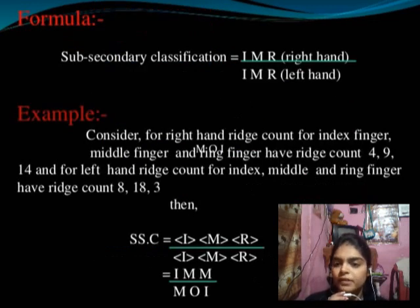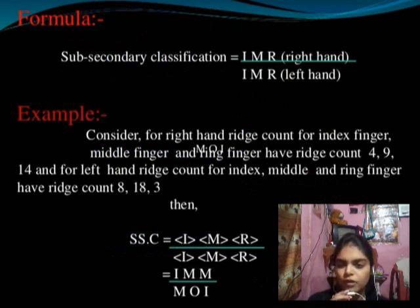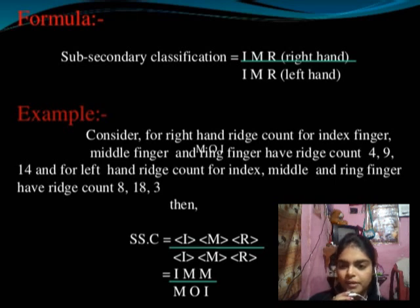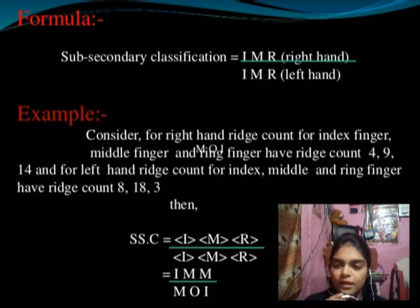Then we make the possibilities and formula in the form of I, M, and O, and also I, M, and R. This formula is made with the right hand fingers in the numerator and the left hand fingers in the denominator. If the whorl pattern is present, we trace the ridges from left to right.